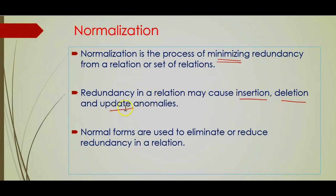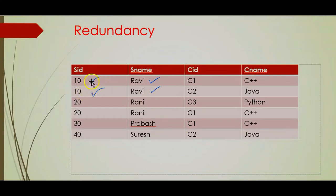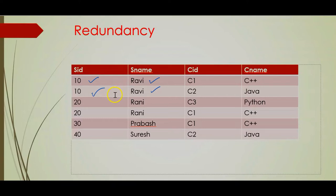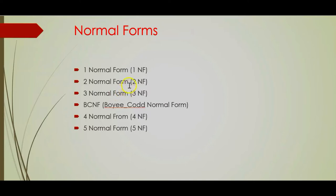Particularly insertion, deletion, and updation anomalies — which were discussed in my earlier video — can occur due to redundancy. Normal forms are used to eliminate that redundancy. There are different normal forms proposed: First Normal Form, Second Normal Form, Third Normal Form, Boyce-Codd Normal Form (BCNF), Fourth Normal Form, and Fifth Normal Form.